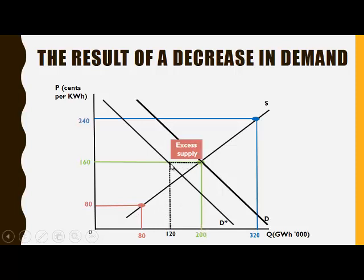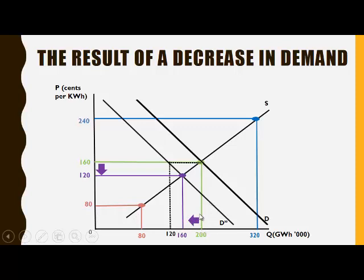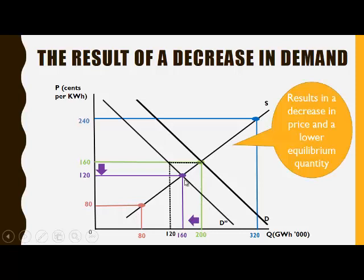Given the new lower level of demand, there is now excess supply at that price, which will put downward pressure on prices. The price is going to decrease to 120, where quantity demanded once again equals quantity supplied, but the new equilibrium quantity is lower than before the decrease in demand. So the decrease in demand has resulted in a decrease in price and a lower equilibrium quantity.